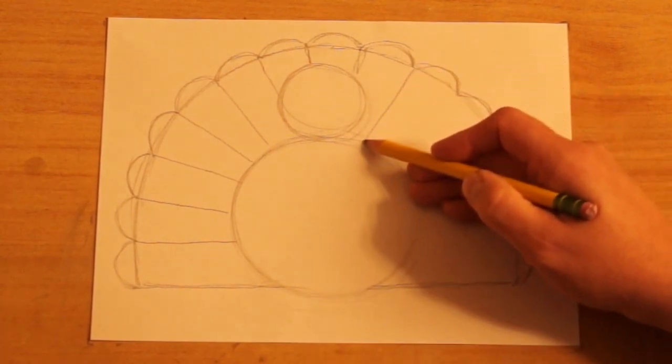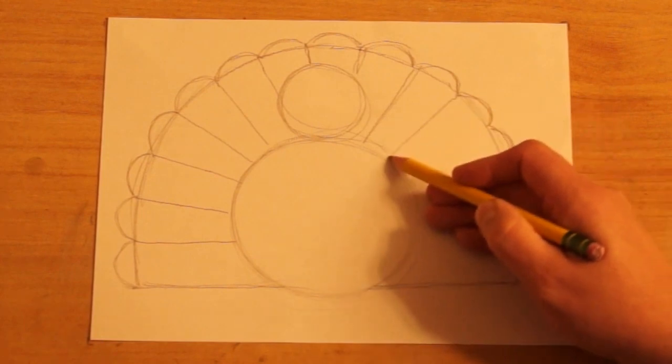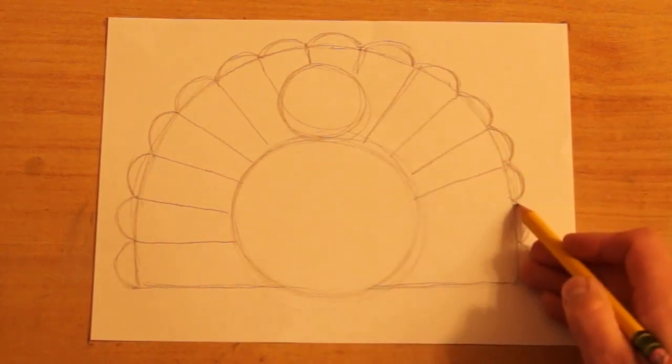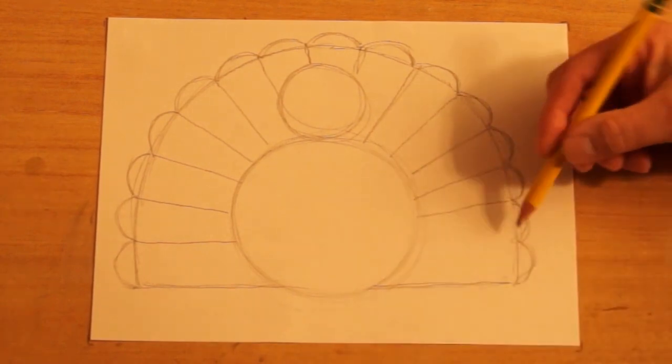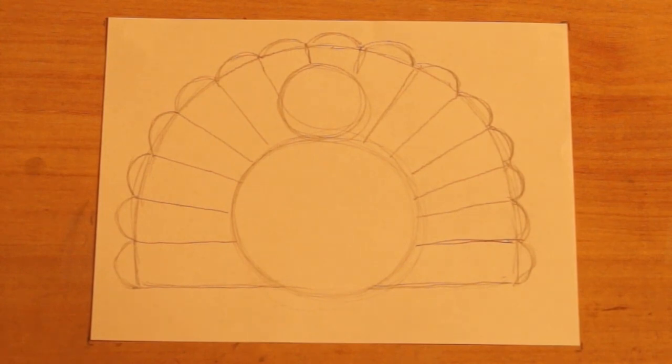The top they go straight down, then this slants in the other direction. Okay, so that's the tail feathers.